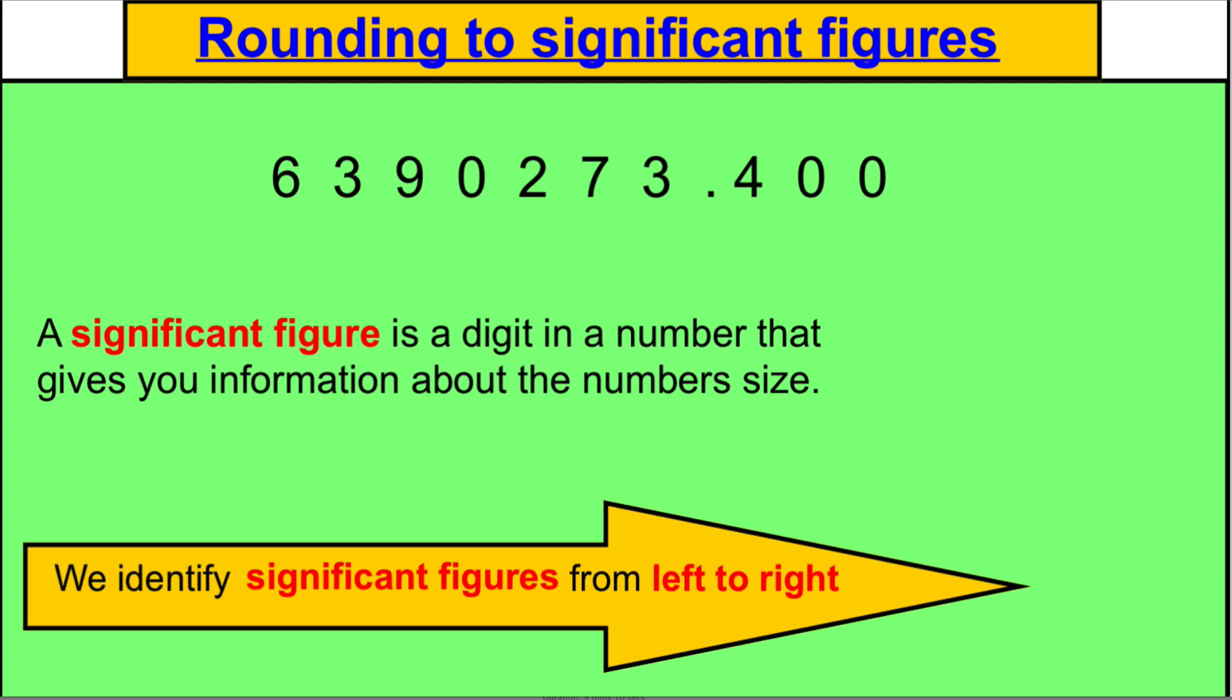What is a significant figure? Well imagine we have this number here. At the moment it's difficult to determine. The commas aren't in. Always put in commas in case there aren't commas in the number. So this is 6,390,273.400.